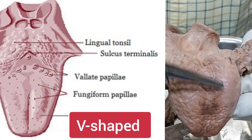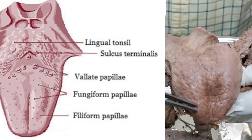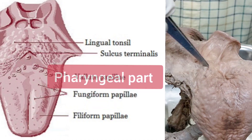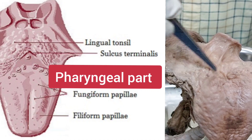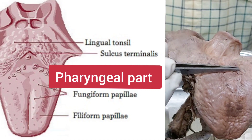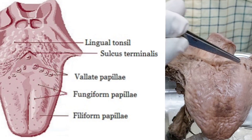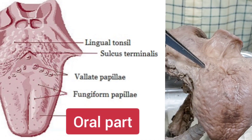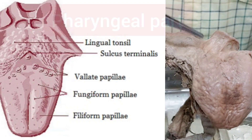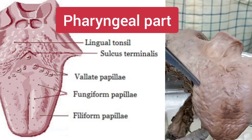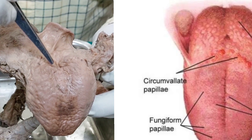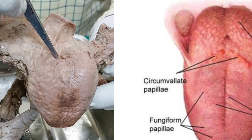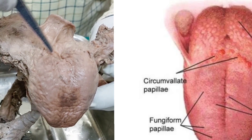In front of this V-shaped sulcus is called the oral part of the dorsal surface. And behind the V-shaped sulcus, this part is called the pharyngeal part of the dorsal surface. So the dorsal surface has two parts: the part in front of the sulcus terminalis and foramen cecum is the oral part, and the posterior part is the pharyngeal part. In front of the V-shaped sulcus terminalis, there are some rounded elevations, parallel to the sulcus, 8 to 12 in number — these are called the vallate papillae.